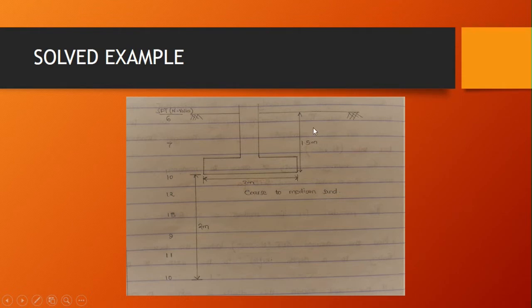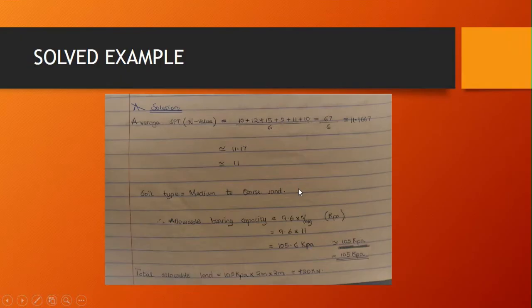Determine the allowable bearing capacity of the footing. So here in this diagram we have SPT values. We also have the depth of the footing being 1.5 meters, the dimension of the footing with the breadth being 2 meters, and the soil is coarse to medium sand. So the SPT values below the footing start from 10, 12, 15, 9, and 11.